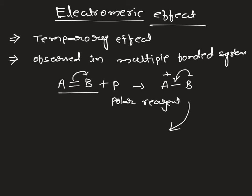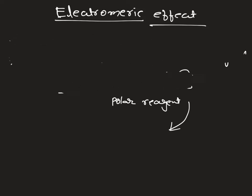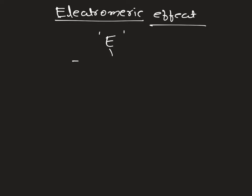Electromeric effect is of two types, and it is generally represented with a capital E. It is two types: positive electromeric effect, denoted as +E, and negative electromeric effect, denoted as -E.